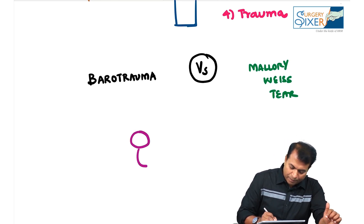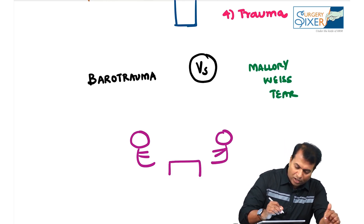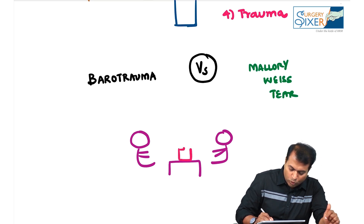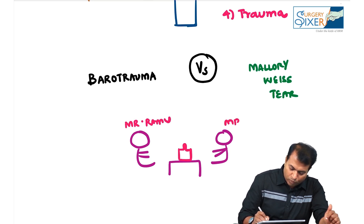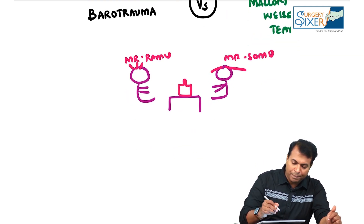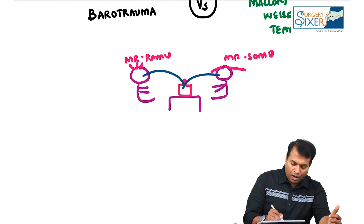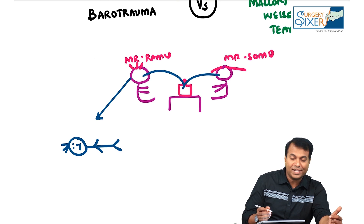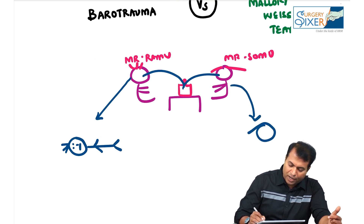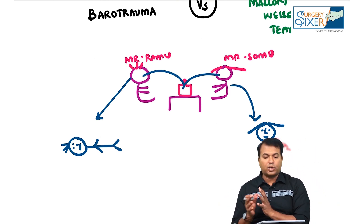There are two guys having alcohol on a Saturday night — Mr. Ramu and Mr. Somo. They both consumed enormous amounts of alcohol and both vomited. After vomiting, Ramu collapsed — his BP was scary, pulse was scary, he was very sick. After vomiting, Somo himself walked to the hospital with a history of only hematemesis.